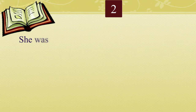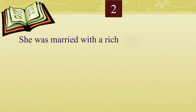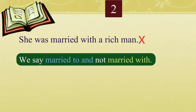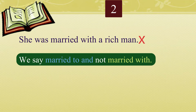Number two: 'She was married with a rich man.' We say 'married to' and not 'married with.' Please repeat the correct sentence after me.